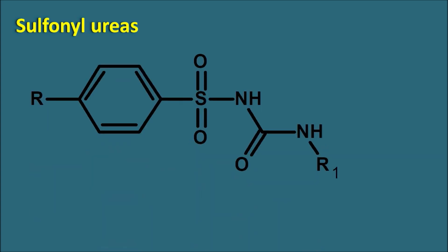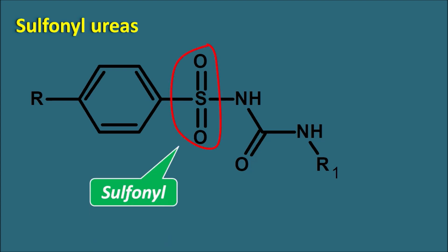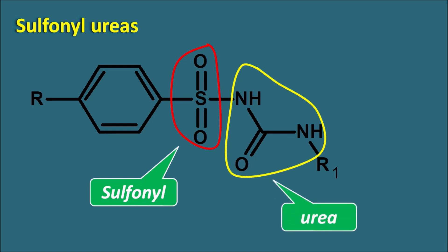Sulfonylureas have a common structure where a sulfonyl group is attached with a phenyl ring in most of the compounds. This sulfonyl group is further attached with a urea group — that's why they are called sulfonylureas. They have structural similarity with sulfonamides, which also have a benzene ring attached with a sulfonamide moiety, but here the nitrogen is further modified such that the amide is converted into urea. Based on different groups present on the phenyl ring and on the nitrogen of the urea, we have different types of sulfonylureas.